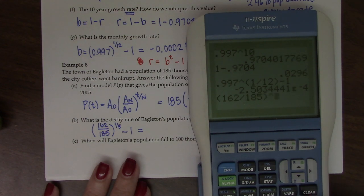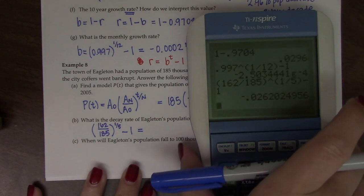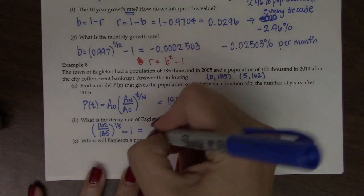So I get the rate in decimal form. I get negative 0.262.